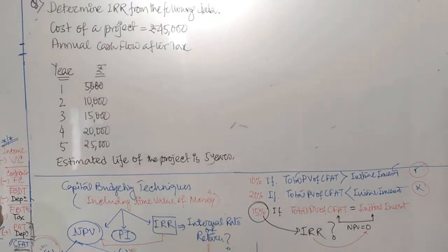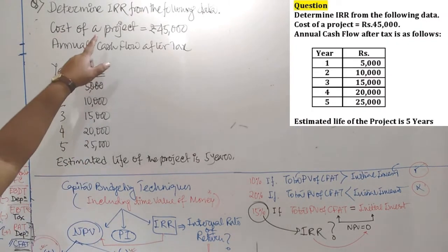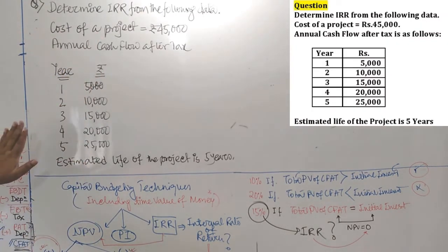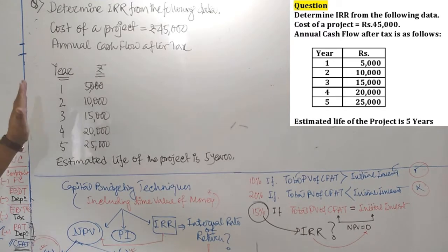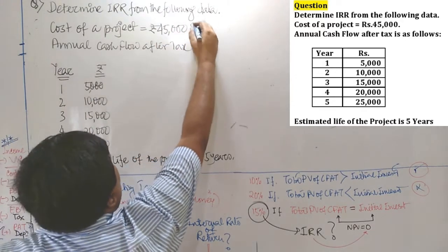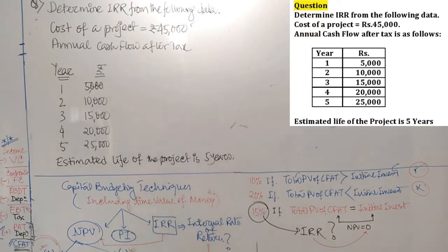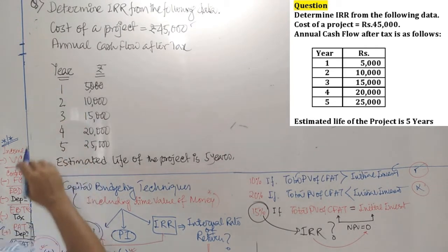Now, take an example. Determine IRR from the following data — a very simple example we have considered to discuss IRR. The cost of a particular project is 45,000. Annual cash flow after tax (CFAT) is available one by one.